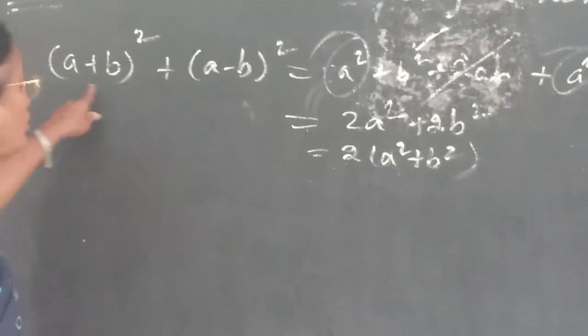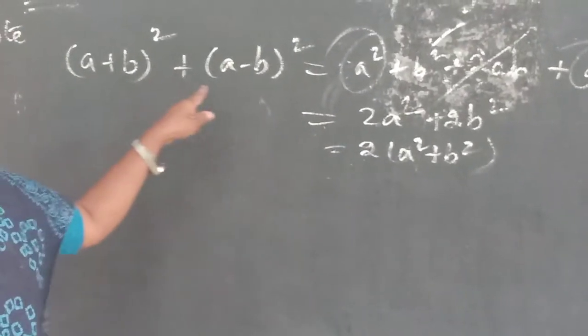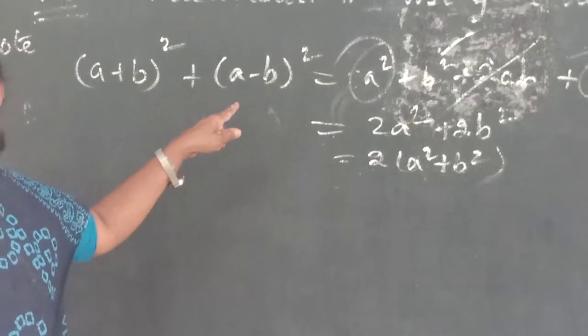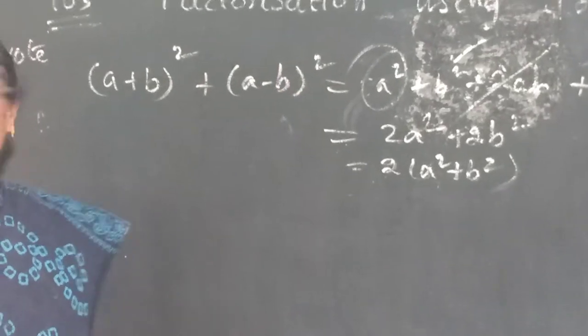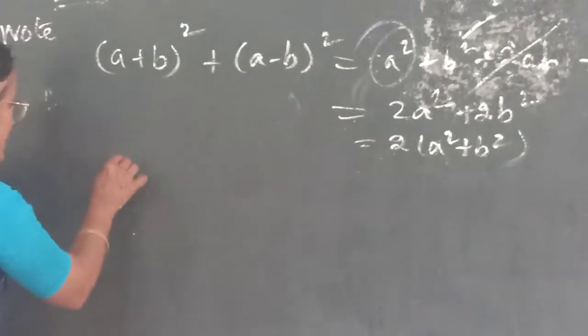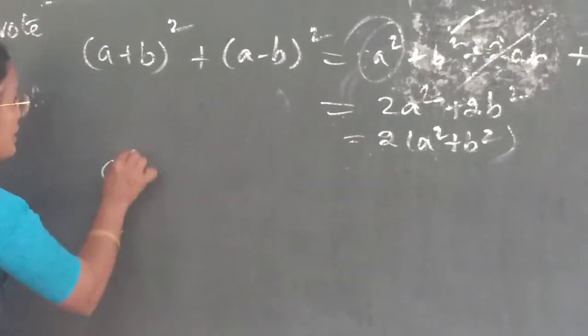Even though you don't know, you know the basic identity, and with that path you can derive it. Understand? Next one is: